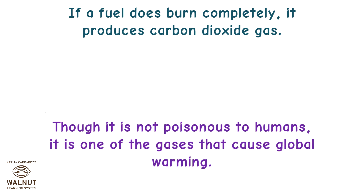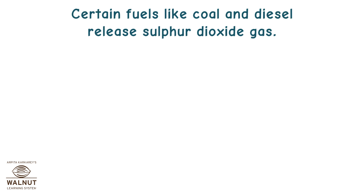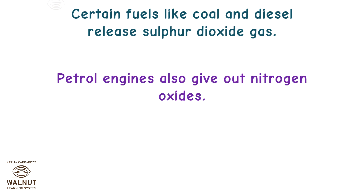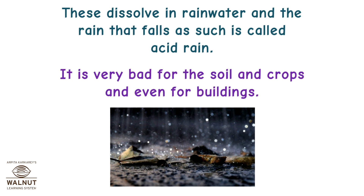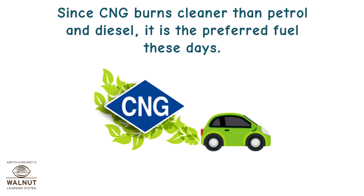Though carbon dioxide is not poisonous to humans, it is one of the gases that cause global warming. Certain fuels like coal and diesel release sulphur dioxide gas, and petrol engines also give out nitrogen oxides. These dissolve in rainwater and the rain that falls as such is called acid rain, which is very bad for soil, crops, and even buildings. Since CNG burns cleaner than petrol and diesel, it is the preferred fuel these days.